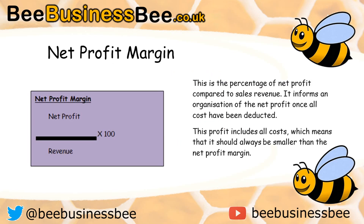Next is the net profit margin, which is very similar. The formula is net profit divided by revenue times 100. Net profit is calculated as revenue minus all costs, or alternatively gross profit minus operating costs. This gives a percentage of net profit compared to sales revenue and informs an organisation of the net profit once all costs have been deducted. It should always be smaller than your gross profit margin.